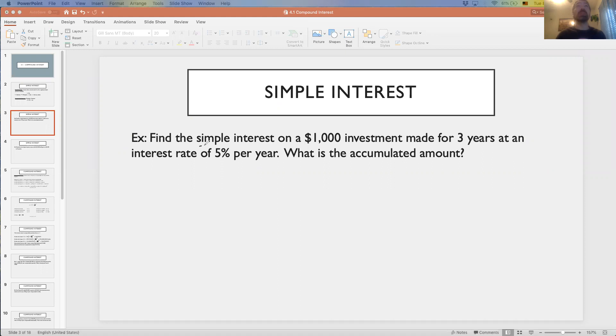What are they asking us to find here? They want us to find the simple interest, and they want us to find the accumulated amount. We can find the simple interest using our interest formula, I equals PRT, and we're plugging in our numbers. Make sure that you understand what's given to us. You may want to identify all the variables.